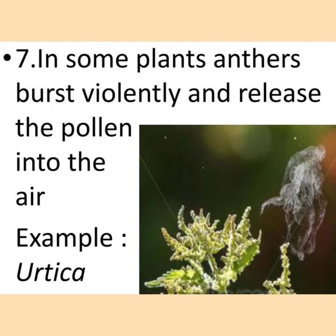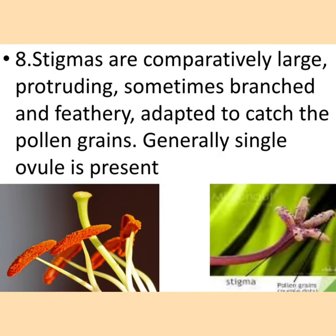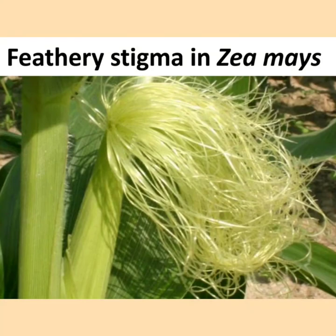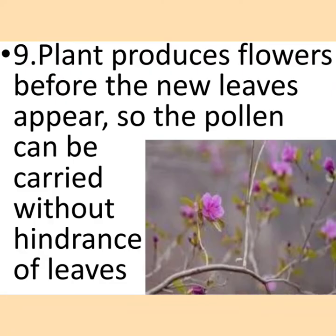Number eight, stigmas are comparatively large, protruding, and sometimes branched and feathery, adapted to catch the pollen grains. These plants usually have a single ovule. You can see the broad and thick stigma on the left side, and on the right side a branched stigma with pollen grains, and the feathery stigma in Zea mays. Number nine, the plants produce flowers before the new leaves appear so the pollen can be carried without hindrance of leaves.